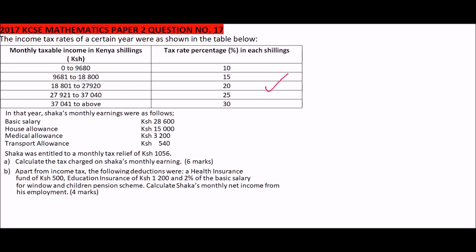The first tax bracket is from zero to nine thousand six hundred and eighty shillings, charged at ten percent of that amount. The brackets go up progressively to thirty-seven thousand and above, charged at the highest percentage rate shown in the table.